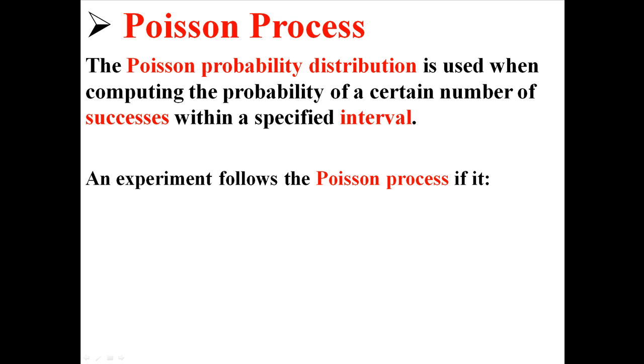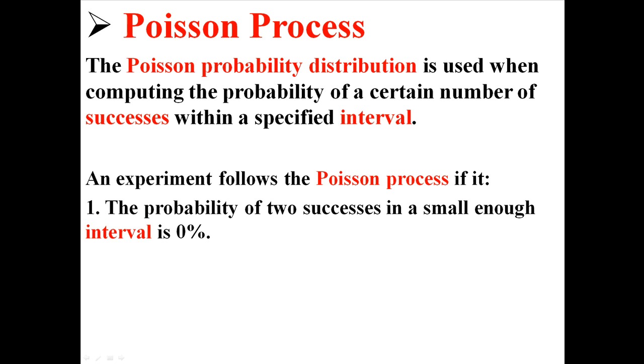An experiment follows the Poisson process if the probability of two successes in a small enough interval is 0%, basically it's impossible for there to be two successes in a small enough interval,